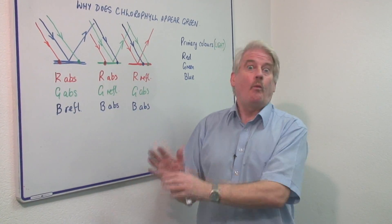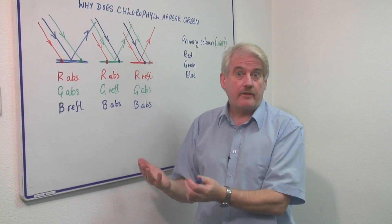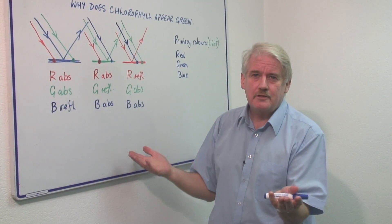So first of all, I'm going to explain why things appear to be the color they are, and then you'll know why a leaf appears to be green.